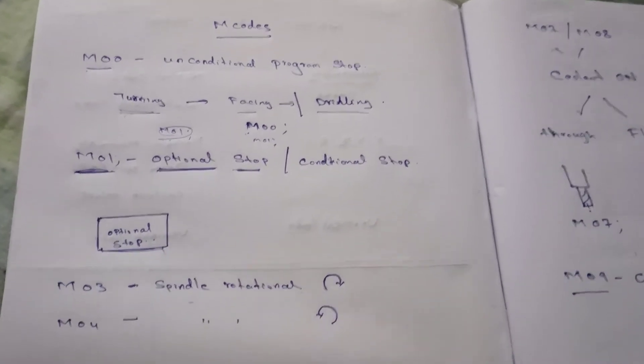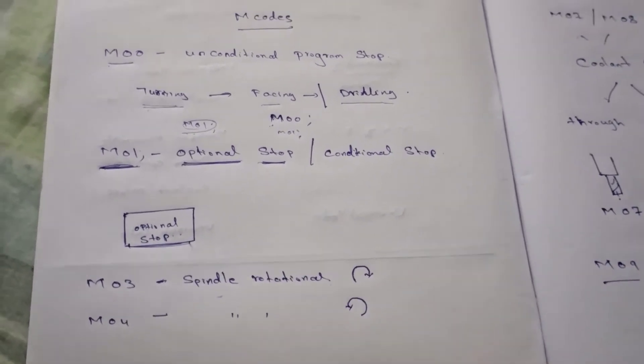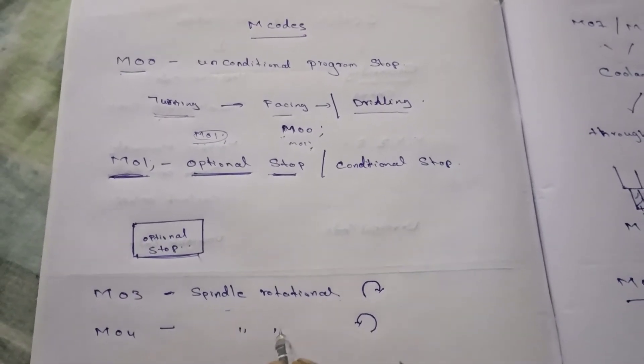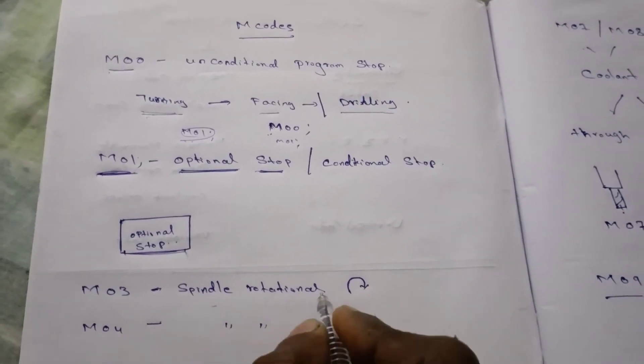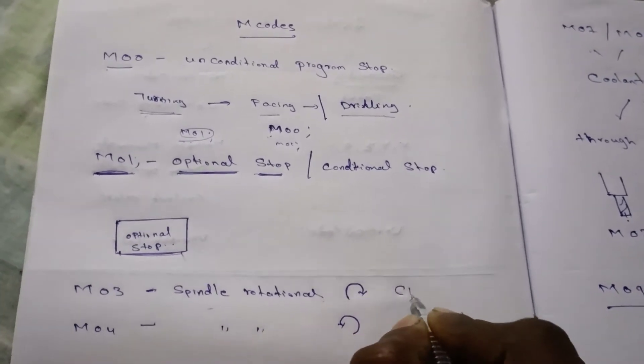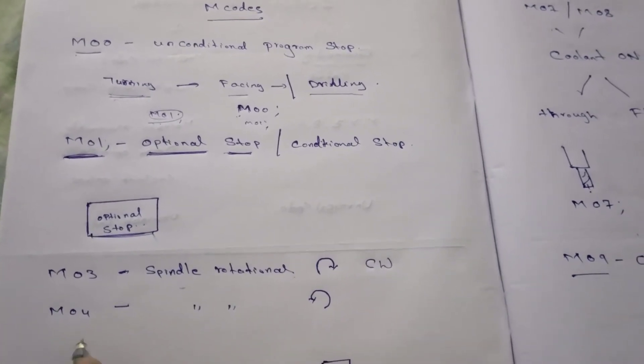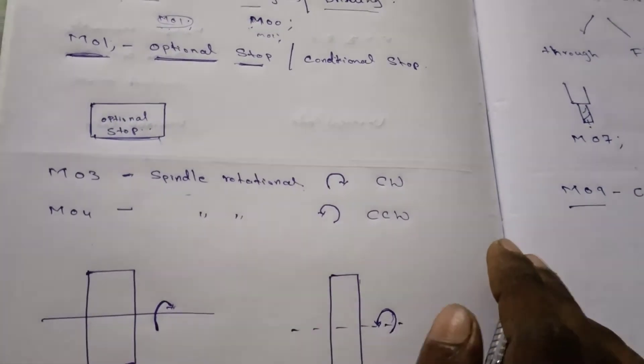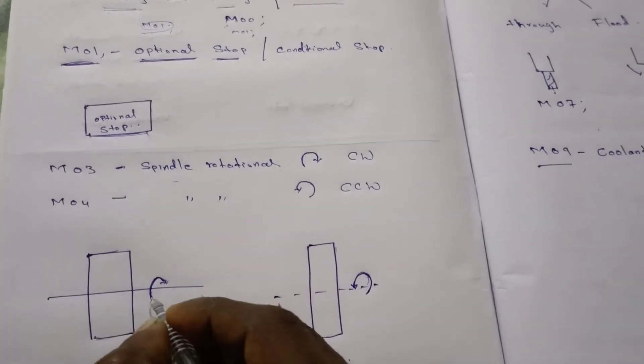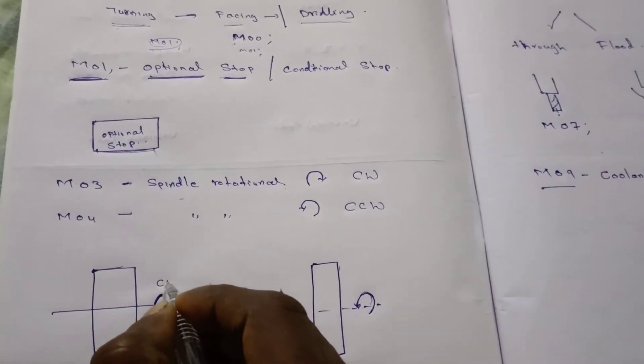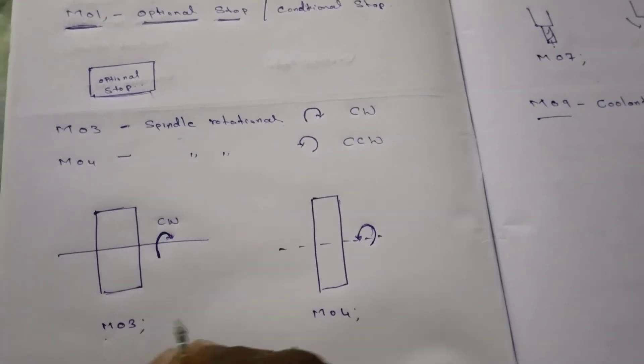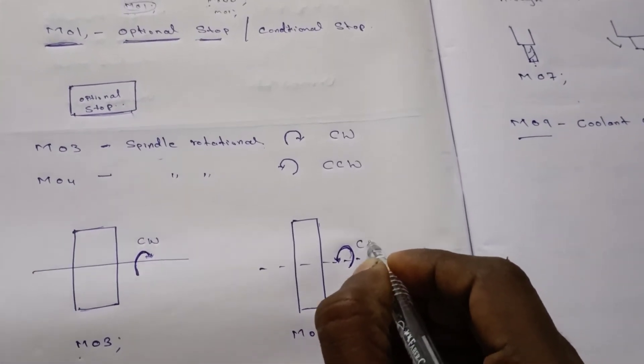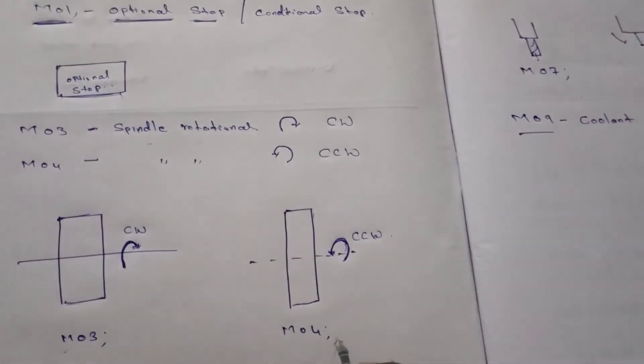And next, M03 and M04. Both codes are used for spindle rotation. It differs in when M03 is used, the spindle rotates in clockwise direction. And when you use M04, the spindle rotates in counterclockwise or anti-clockwise rotation.